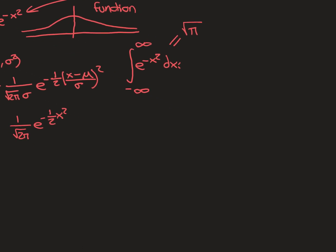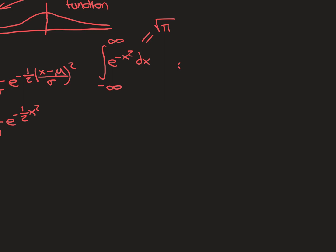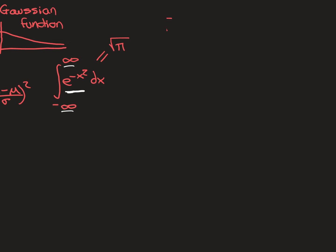So we have the answer already — it's the square root of π — but now we want to actually derive it. If you initially try using the standard method, you would try to find an antiderivative so you can apply the fundamental theorem of calculus. Try to find a closed-form expression for the antiderivative of e^(-x²). Have a go.